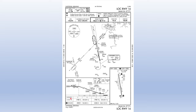Looking at our minimums, we want the straight-in localizer to runway 16. We're a Category A aircraft, so our MDA is 1,780 feet on the altimeter — 528 feet above the ground. We'll calculate a DDA by adding 50 feet, giving us a derived decision altitude of 1,830 feet, which is 578 feet above the ground. With a 600-foot ceiling, we should still be able to get in. The airport diagram confirms the field elevation of 1,252 feet and the touchdown zone elevation.